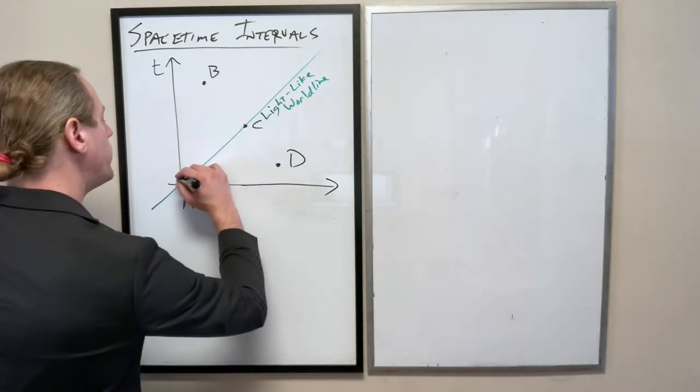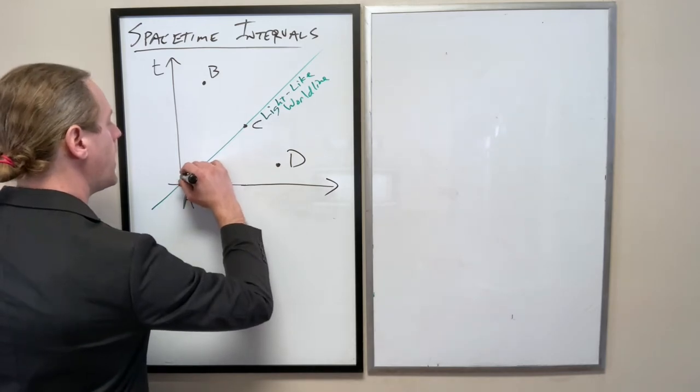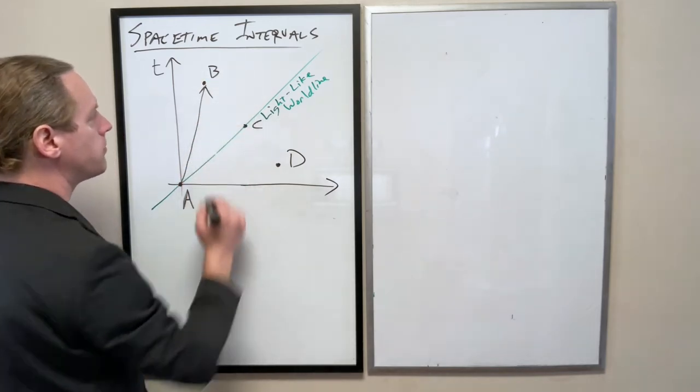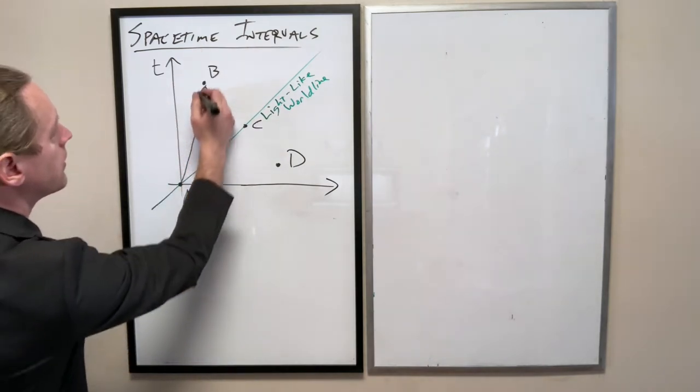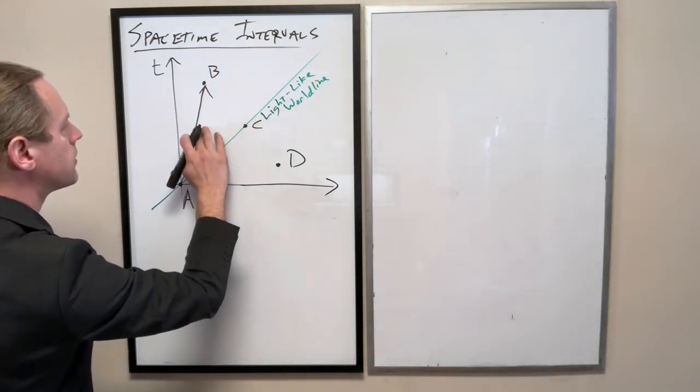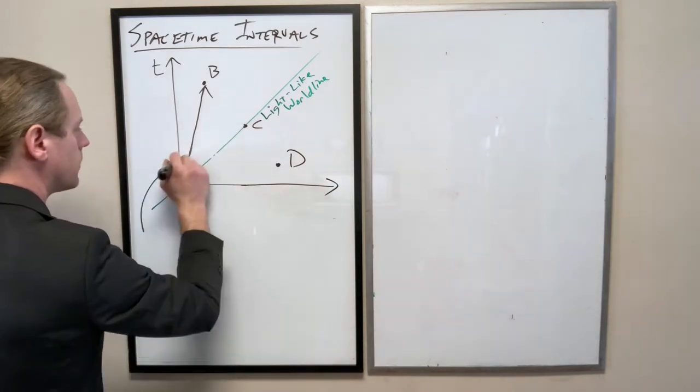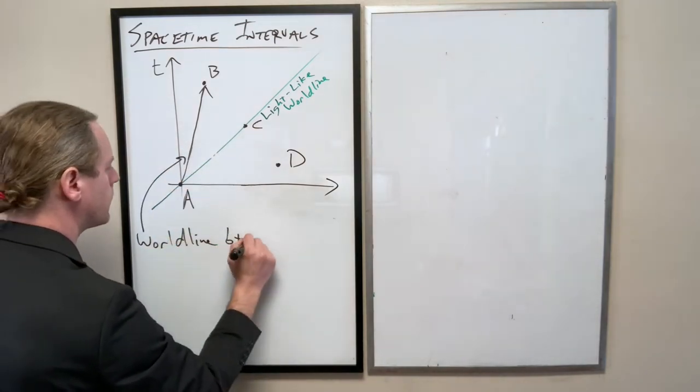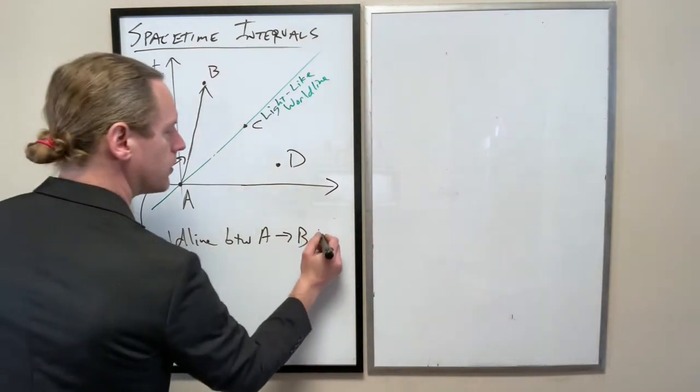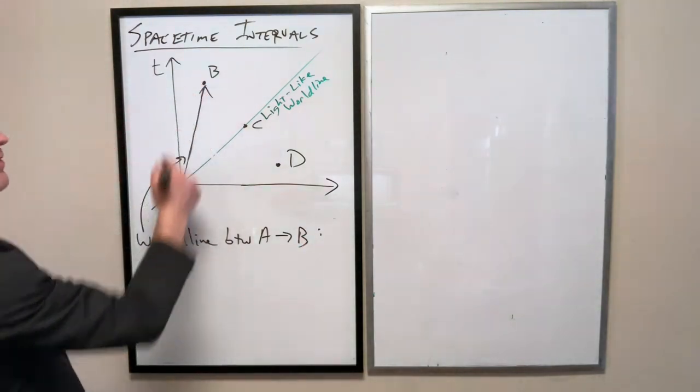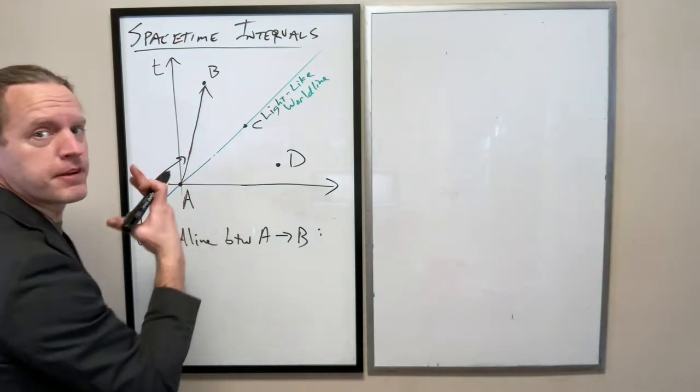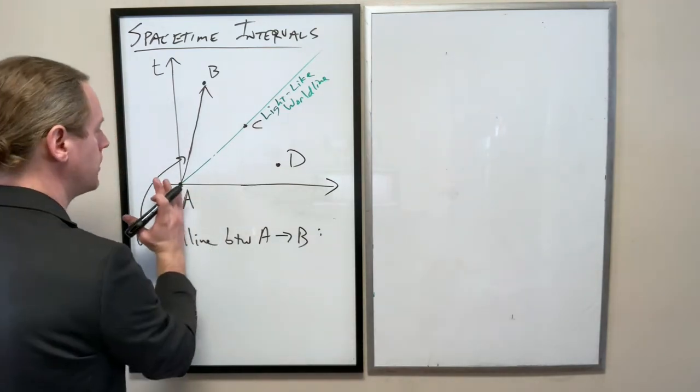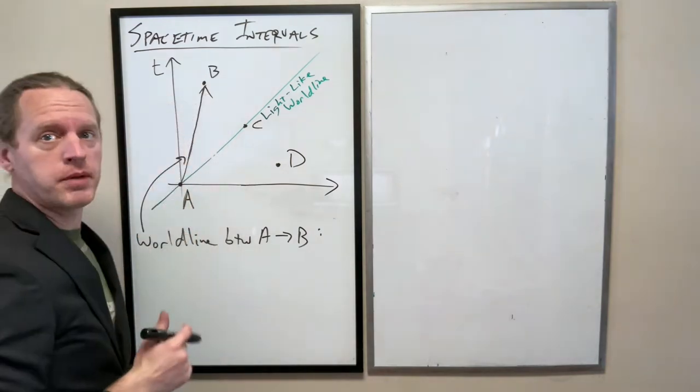So you can always connect event A to event B with some constant motion less than the speed of light. So this world line I've just drawn is the path that any observer would take if they're moving at a constant velocity, beginning at point A and ending at point B.